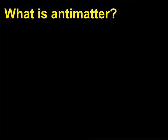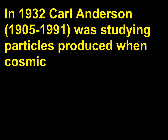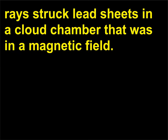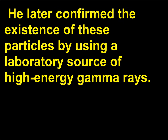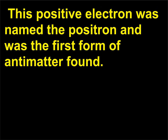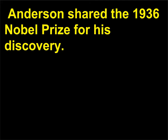What is antimatter? In 1932 Carl Anderson (1905–1991) was studying particles produced when cosmic rays struck lead sheets in a cloud chamber that was in a magnetic field. He found low-mass particles that curved the opposite direction from electrons, showing that they had positive charge. He later confirmed the existence of these particles by using a laboratory source of high-energy gamma rays. This positive electron was named the positron and was the first form of antimatter found. Anderson shared the 1936 Nobel Prize for his discovery.